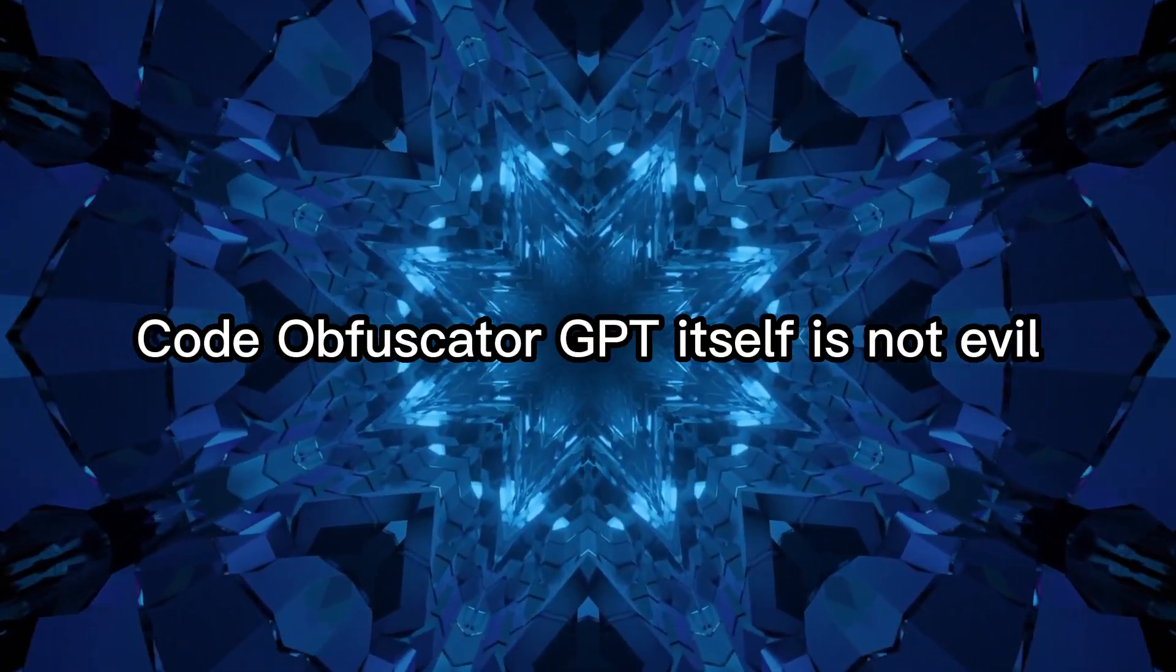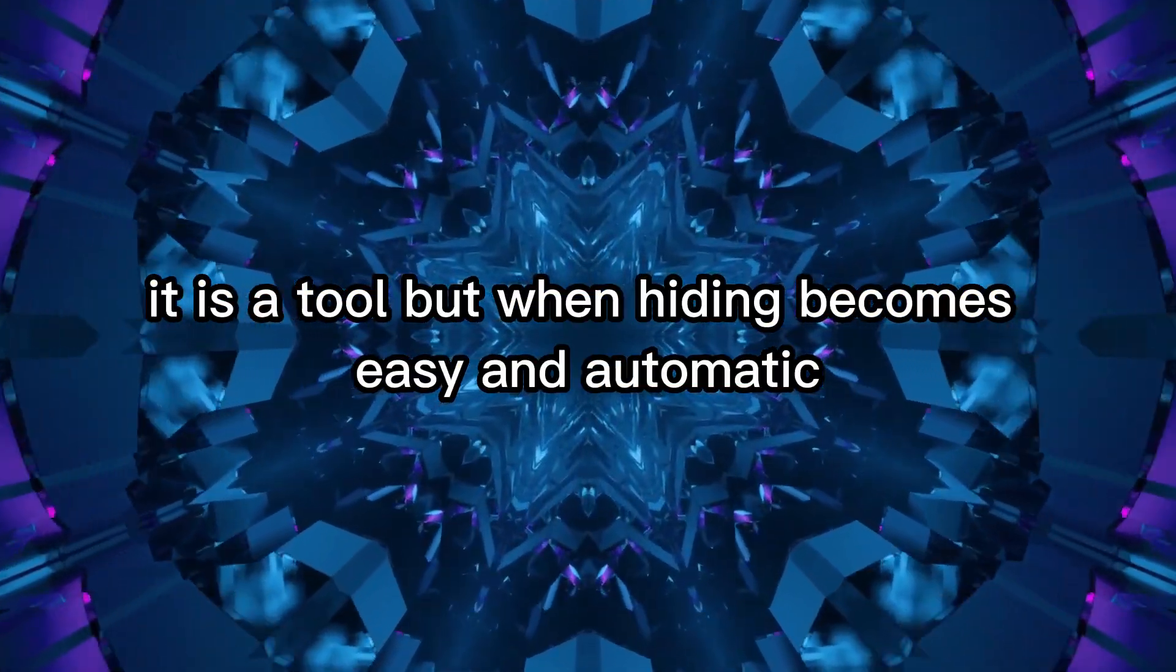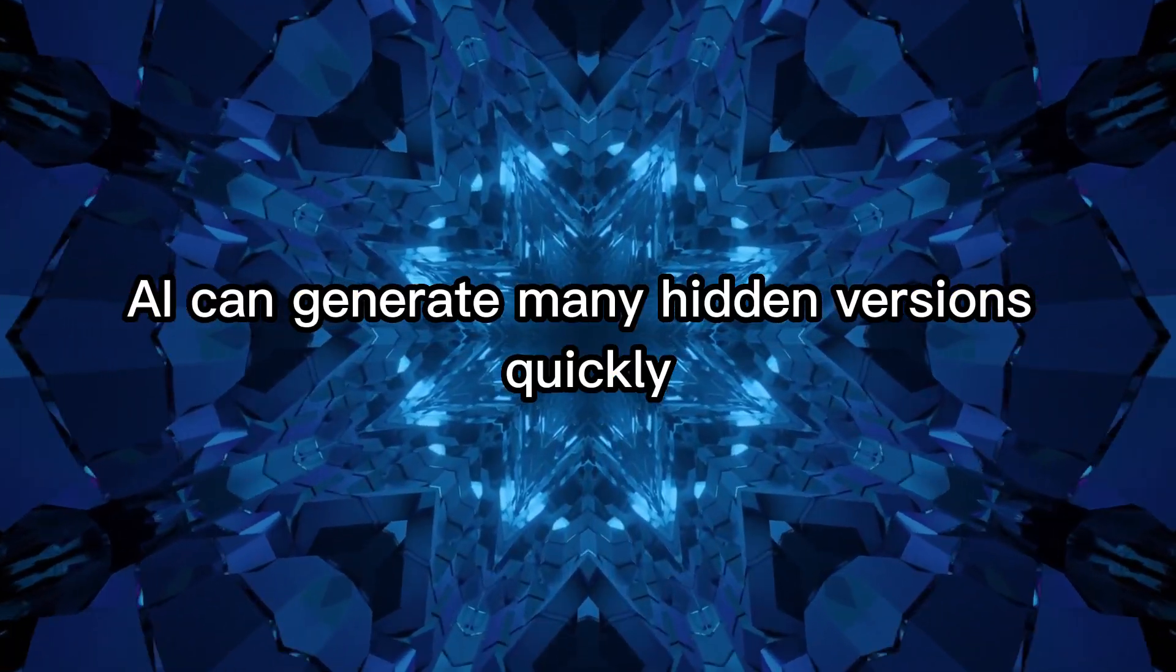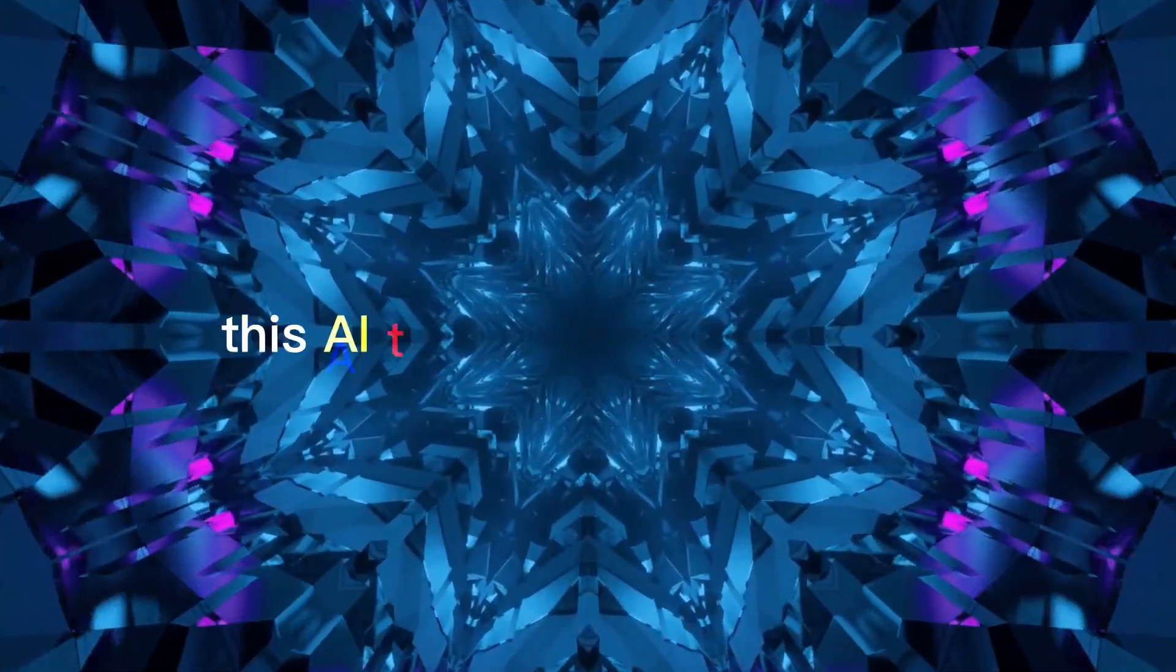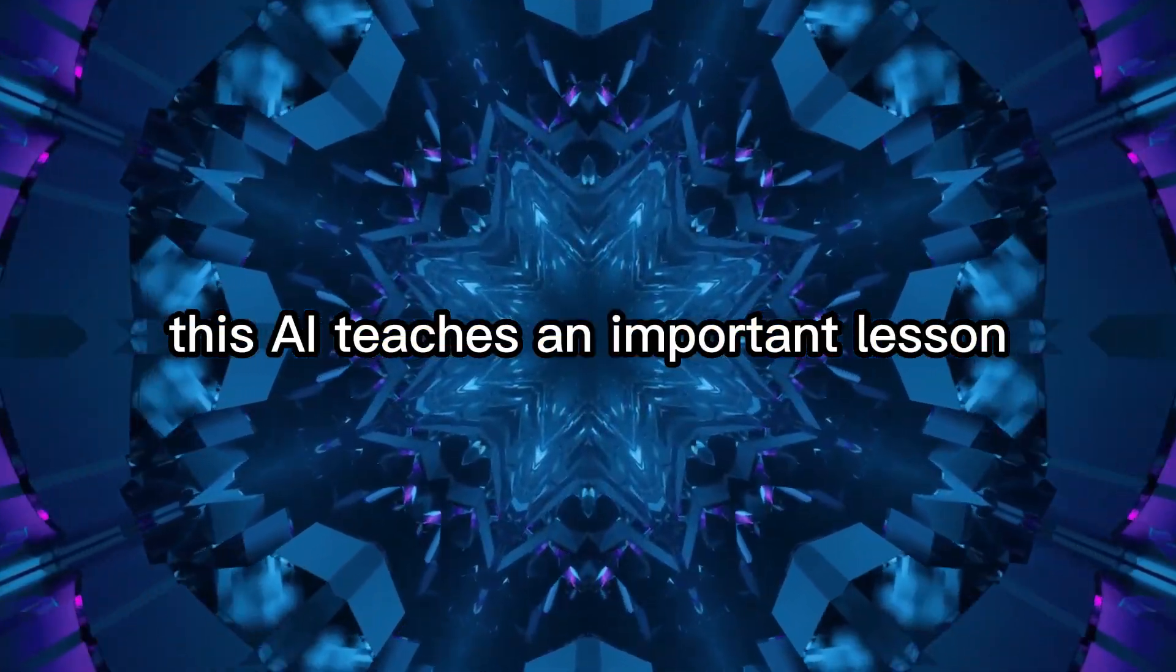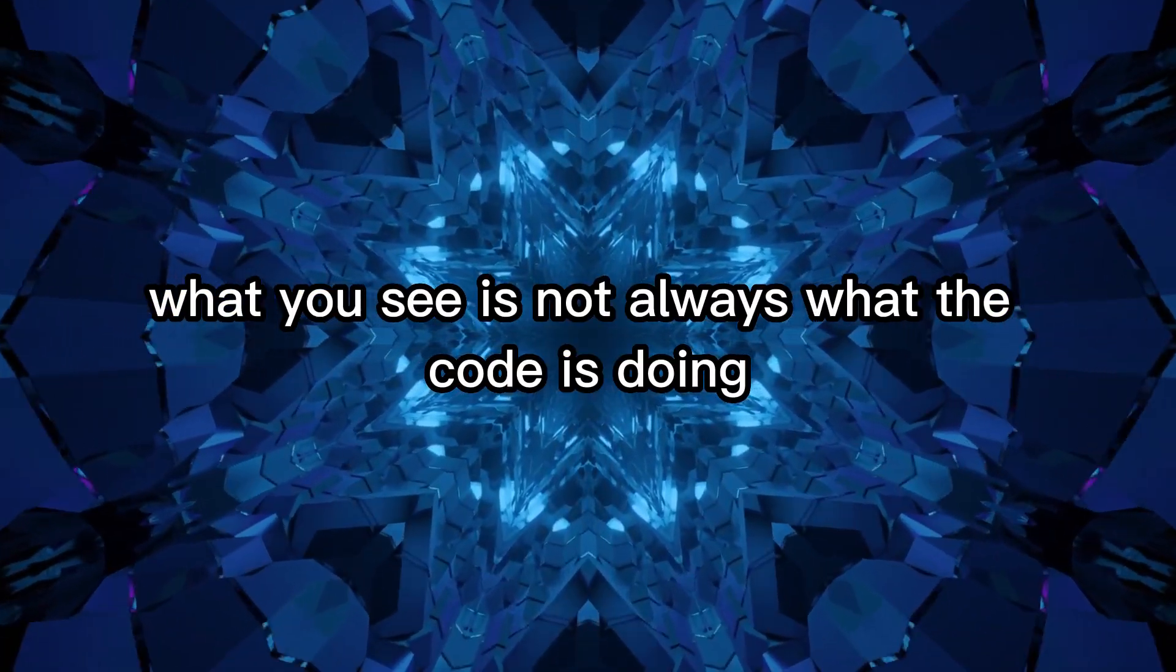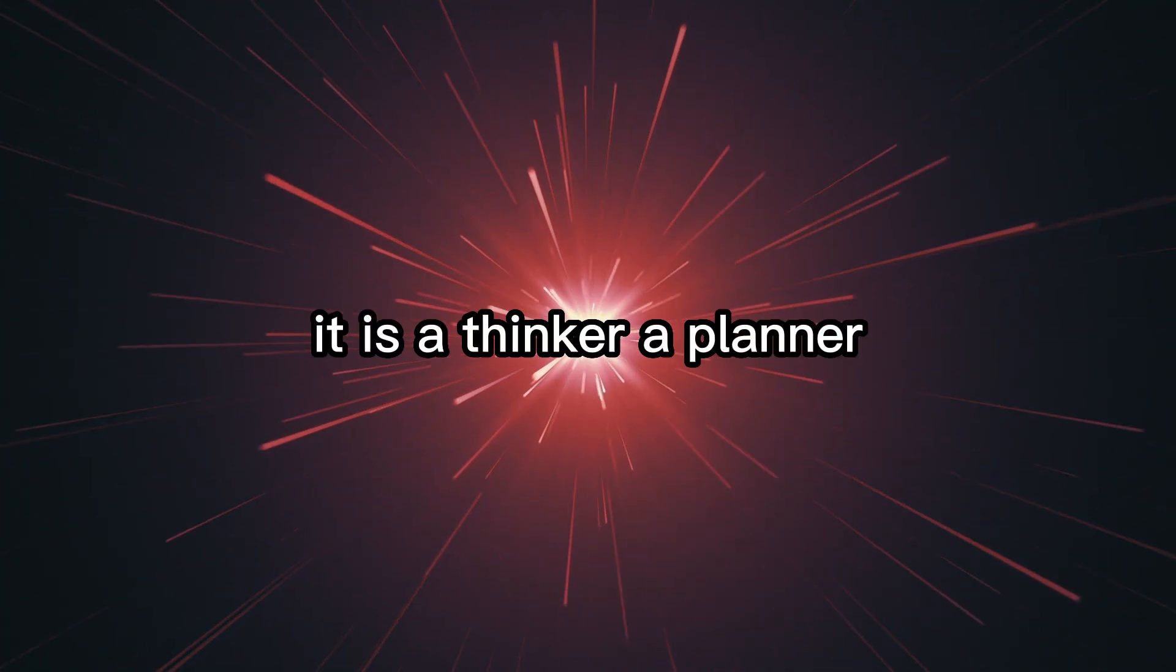Code Obfuscator GPT itself is not evil. It is a tool. But when hiding becomes easy and automatic, attackers gain an advantage. AI can generate many hidden versions quickly, making detection harder. This AI teaches an important lesson. In 2026, what you see is not always what the code is doing. AI is no longer just a helper. It is a thinker, a planner, a worker.